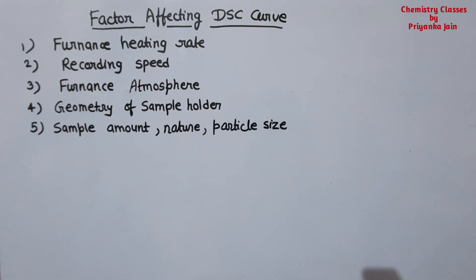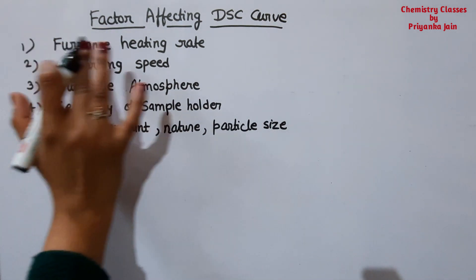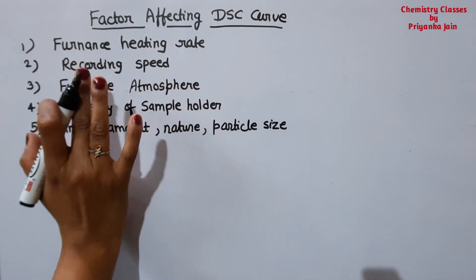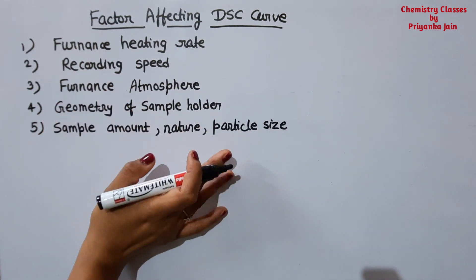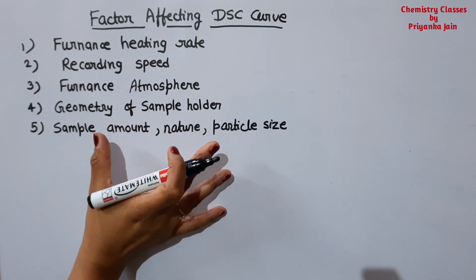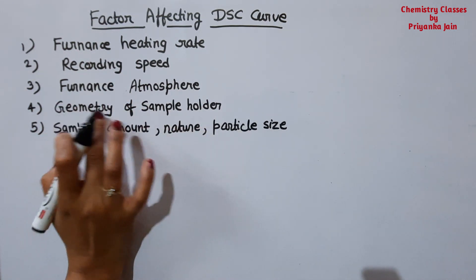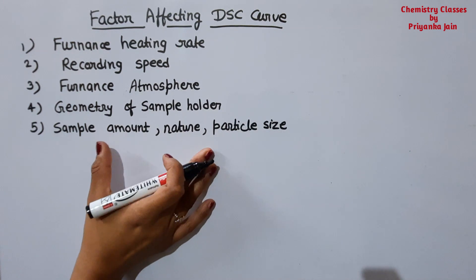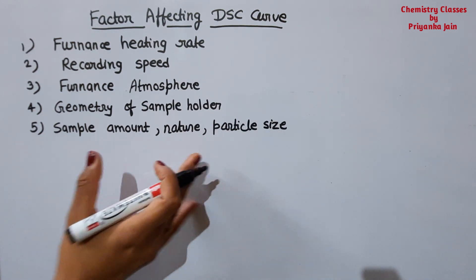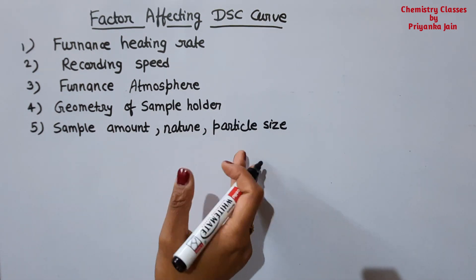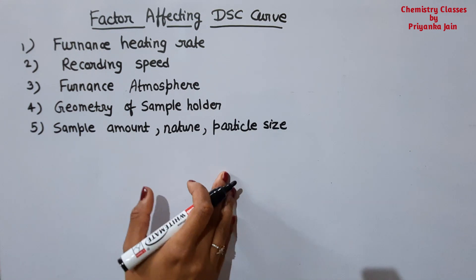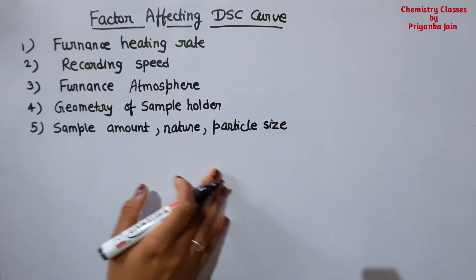The factors affecting the DSC curve are: first, the furnace heating rate; second, the recording speed; third, the furnace atmosphere; fourth, the geometry of the sample holder; and fifth, the amount of sample, its nature, and its particle size.